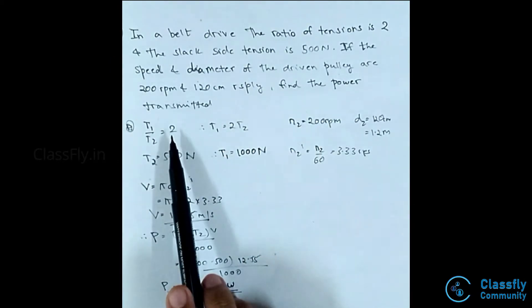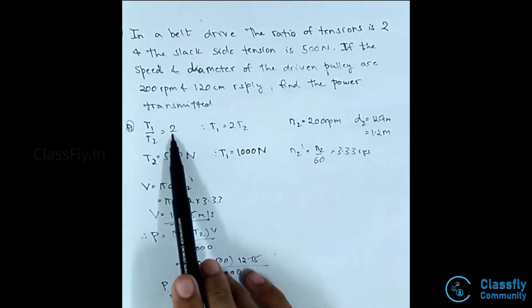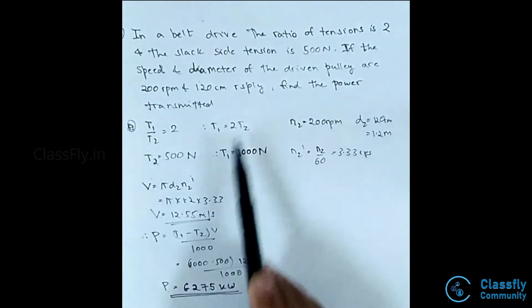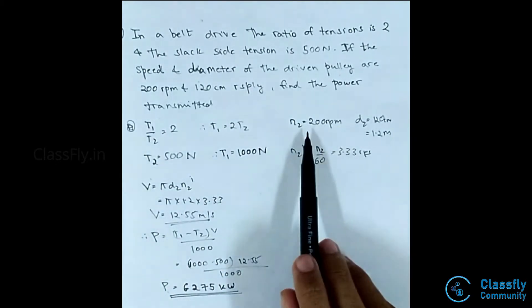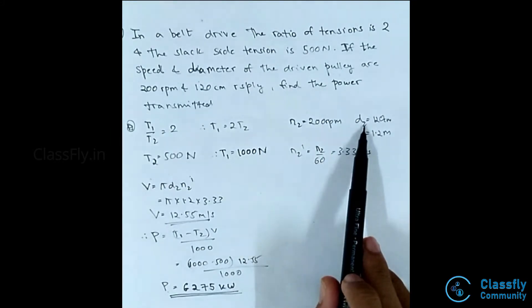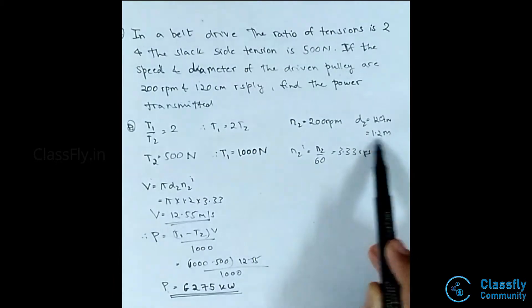In the question, it is given that the ratio of tensions is 2, hence T1 by T2 equals 2. From this we can write that T1 equals 2T2. Also, the speed N2 equals 200 rpm and the diameter D2 equals 120 centimeters, which is 1.2 meters.